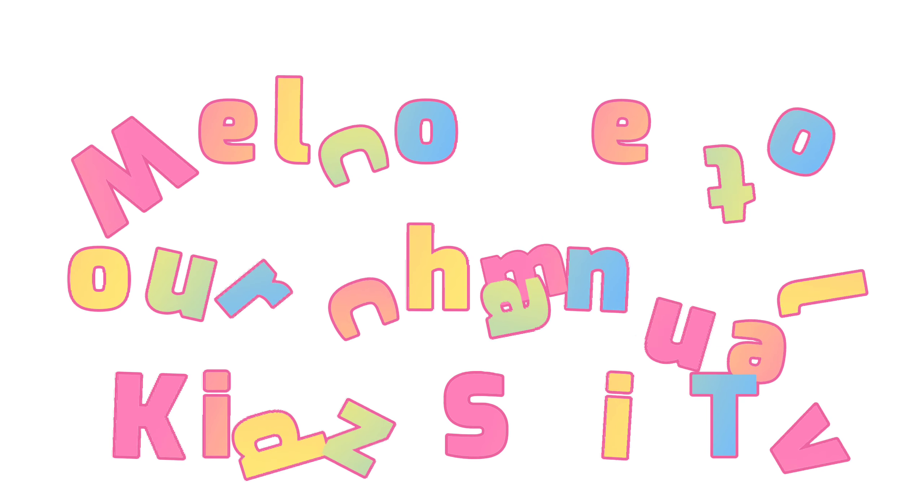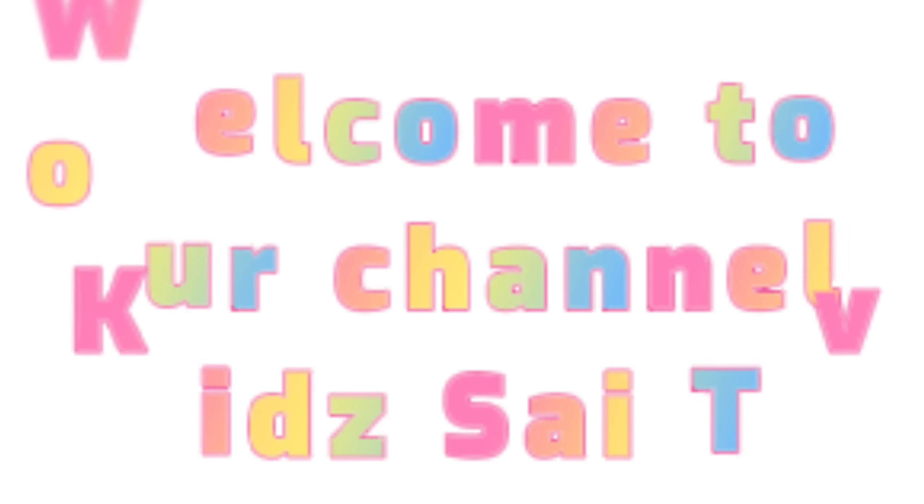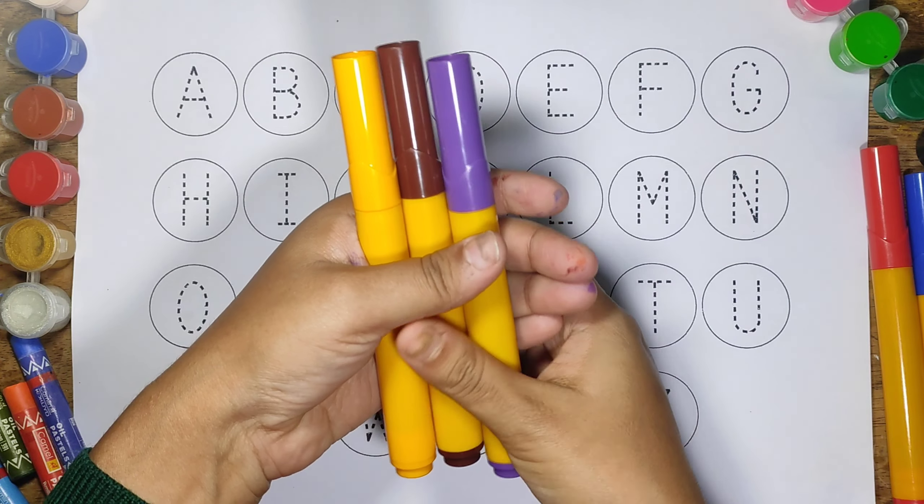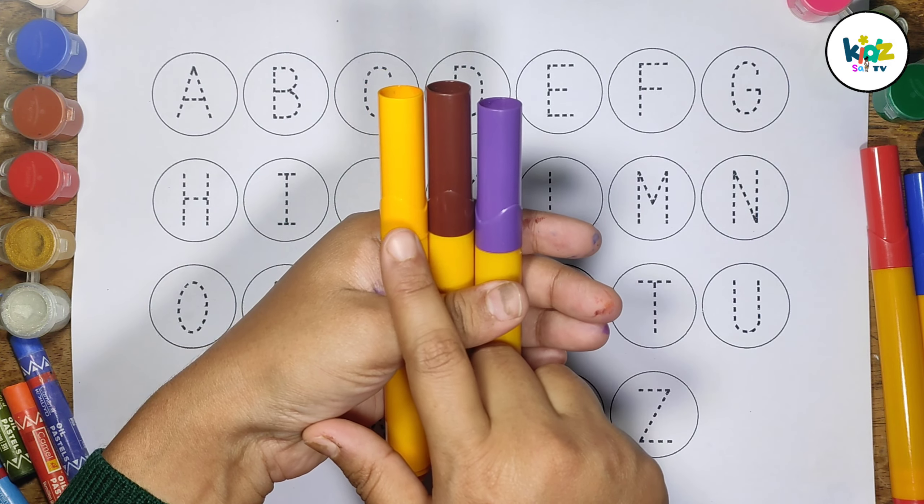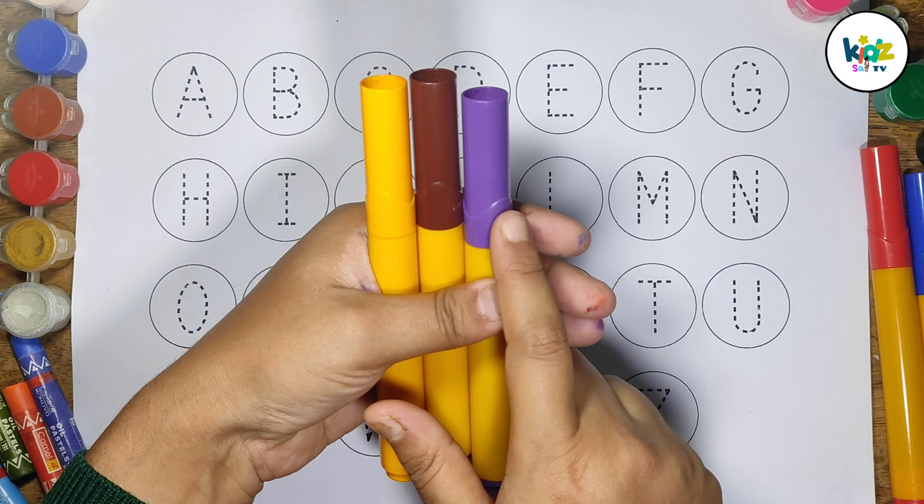Hello little cuties. Welcome to our channel Kidz Sai TV. Today we will press A to Z. We have three colors: Orange, Brown and Violet.